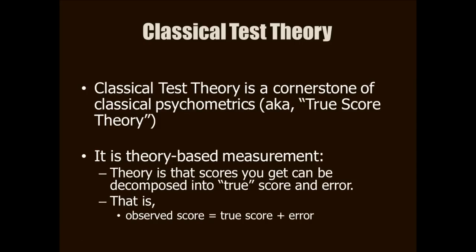Now, before we get too far, let's start with the most well-known approach to measurement: classical test theory, also known as true score theory. As the name implies, it's a theory-based approach. The theory is that the scores you obtain for persons on a measure — their observed scores — are made up of two parts: their true score, something you can never really know, plus the error that's inherent in measurement.